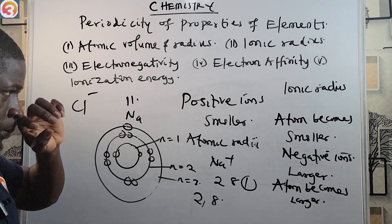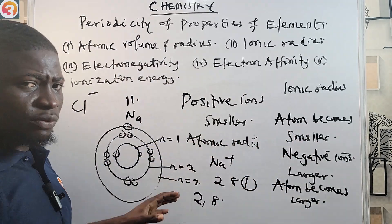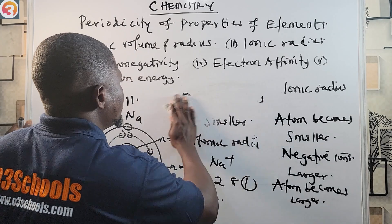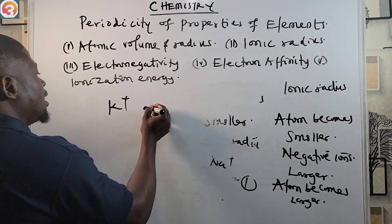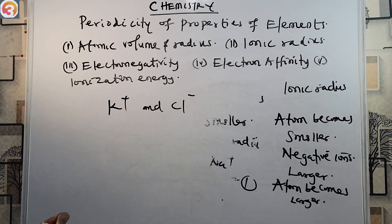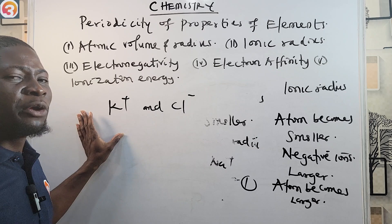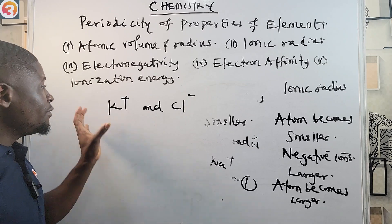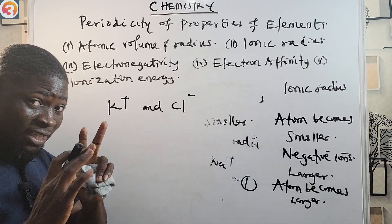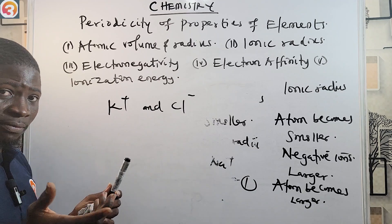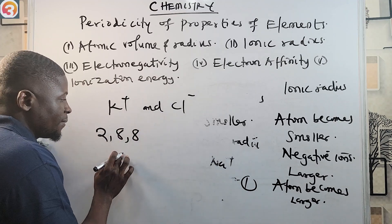So you need to understand both cases: the ionic radius of positive ions is smaller than atomic radii, while the ionic radius of negative ions is larger than atomic radii, depending on whether the atom loses or gains electrons.